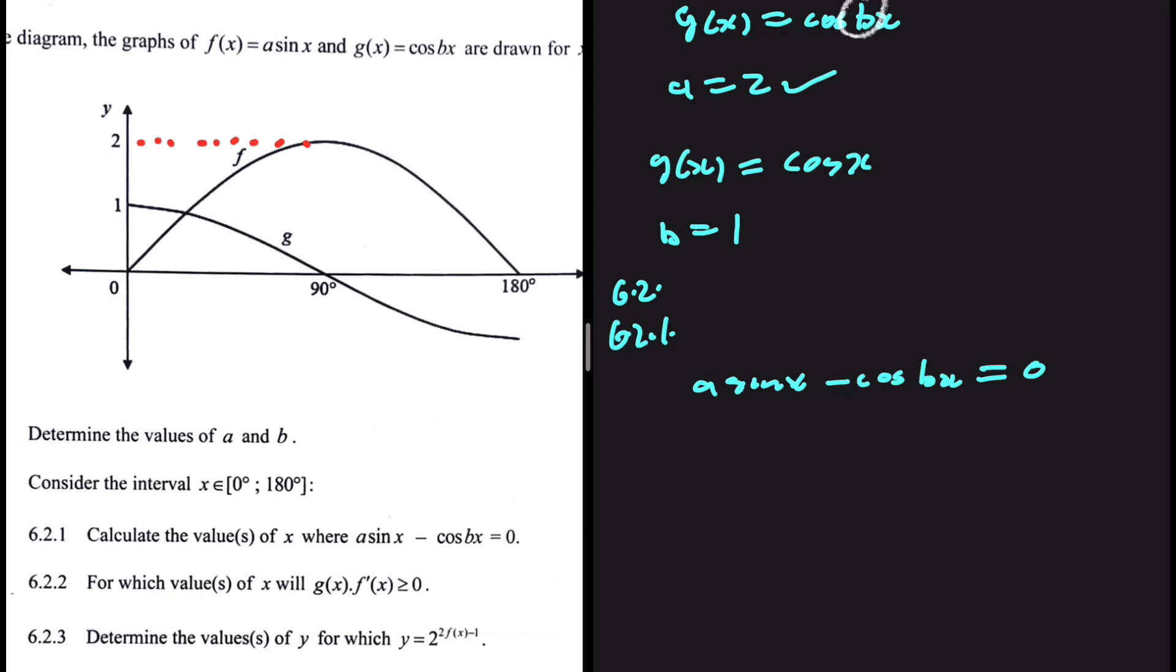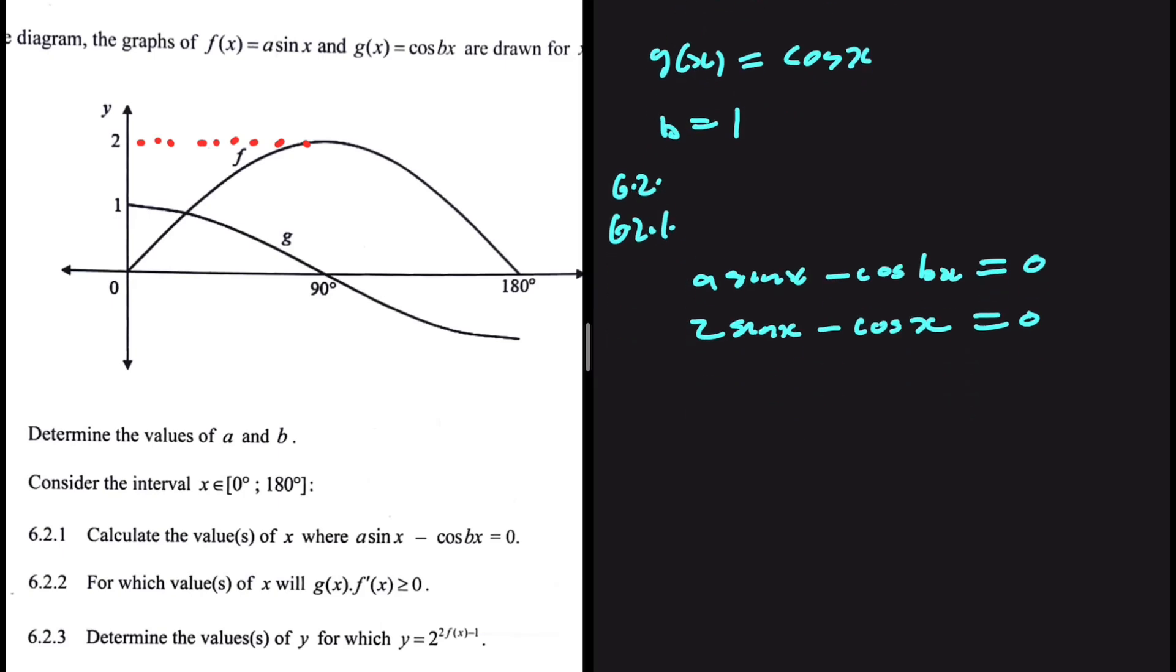We know the values of a and b. So let's go ahead and substitute those. We're going to have 2 sin x minus cos x equals 0. Let's take cos x to the right hand side. If we do that, we're going to have 2 sin x equals cos x.